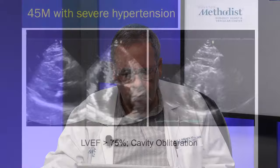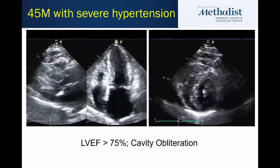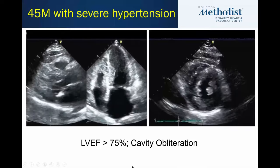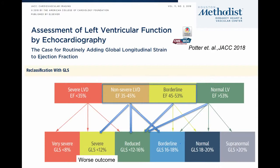Here is a nice example of the divergence between ejection fraction and GLS. This is a hypertensive patient with severe concentric LVH and cavity obliteration — ejection fraction is 90%. And yet, look at the strain curves from the four-chamber, two-chamber, and three-chamber views. There is a lot of heterogeneity visible on the bull's eye, where softer colors indicate lower values. The average is reduced to 14.2%. This illustrates that in the presence of a normal ejection fraction, some patients can have depressed GLS.